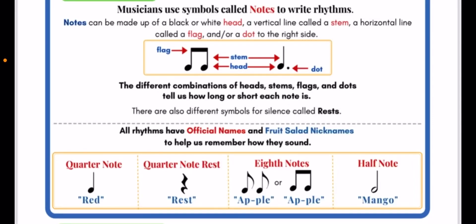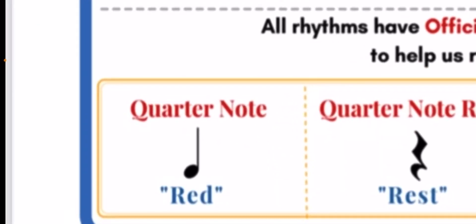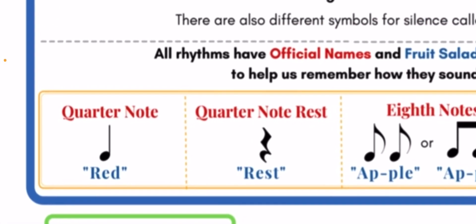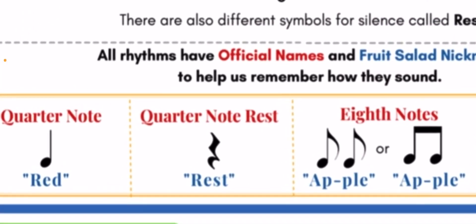Let's go through the different official names and the fruit salad nicknames for each of our notes. First we have a quarter note — it looks like a dark filled-in note head with a stem, and its nickname is Red. Then we have a quarter note rest. They share a lot in common: a quarter note makes sound for one beat, and a quarter note rest is just silence for one beat. We just say 'rest.'